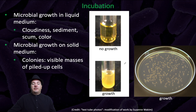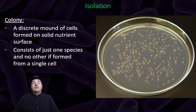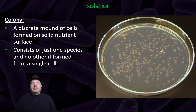You can also detect through incubation microbial growth in solid medium. Colonies are visible masses of piled-up cells. For example, this is a bacterial colony on this petri plate. A colony is a discrete amount of cells formed on a solid nutrient surface, and it consists of just one species if it's formed from a single cell.